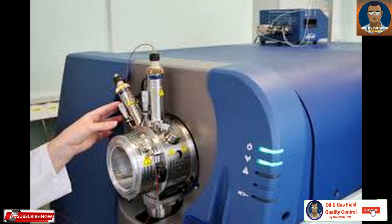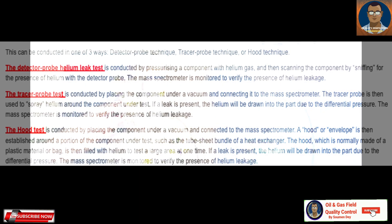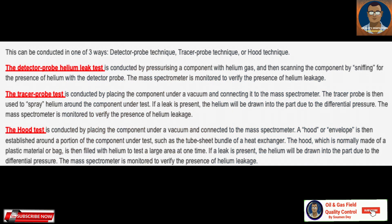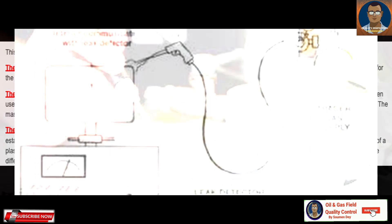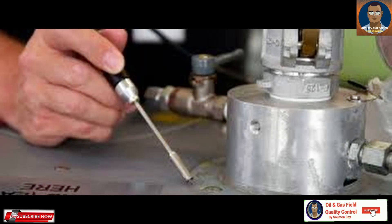This can be conducted in one of three ways: the detector probe technique, the tracer probe technique, or the hood technique. The detector probe helium leak test is conducted by pressurizing a component with helium gas and then scanning the component by sniffing for the presence of helium with the detector probe. The mass spectrometer is monitored to verify the presence of helium gas.